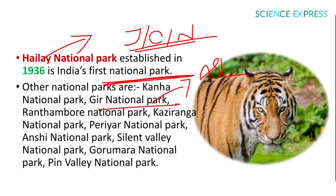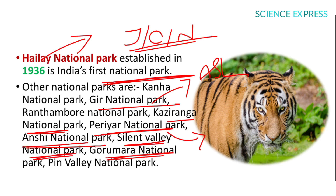Other national parks include Ranthambore in Rajasthan, Kaziranga in Assam, Periyar in Kerala — famous for elephants — Anshi in Karnataka, Silent Valley in Kerala, Gorumara in West Bengal, and Pin Valley in Himachal Pradesh.